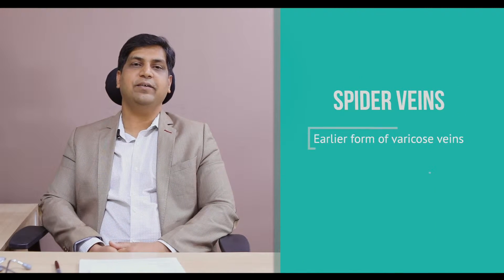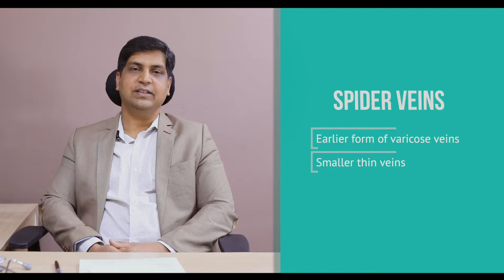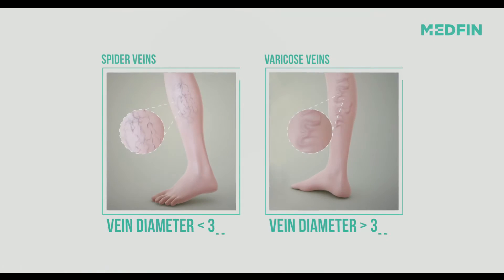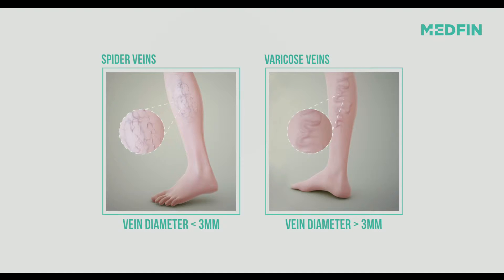Spider veins are the earlier form of varicose veins — smaller, thinner veins also called reticular veins. Veins measuring less than three millimetres in diameter are called spider or reticular veins; those more than three millimetres are called varicose veins. Spider and reticular veins are mostly cosmetic issues that don't usually require intervention, just medical management. Once they become symptomatic varicose veins, a vascular surgeon should be consulted.